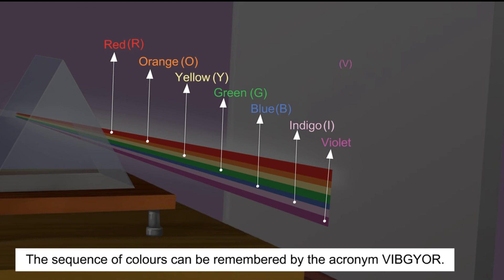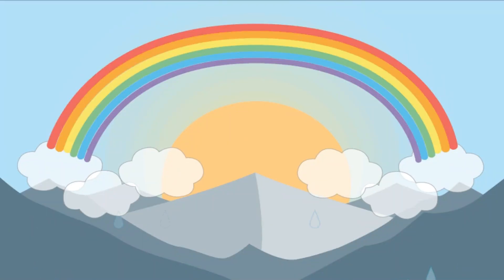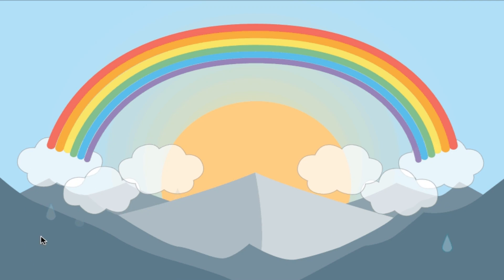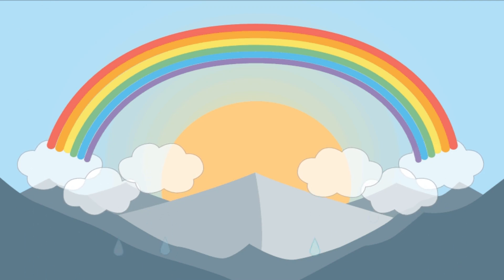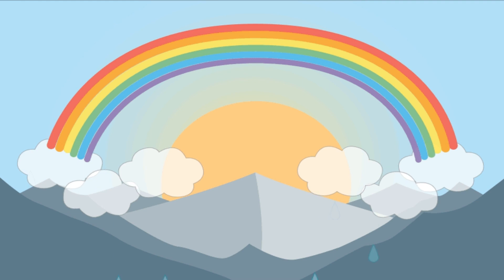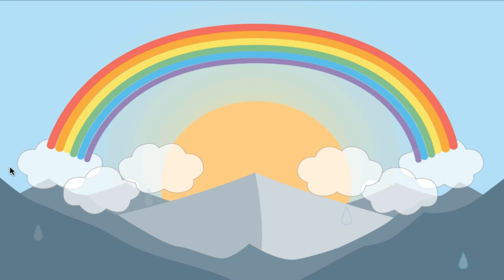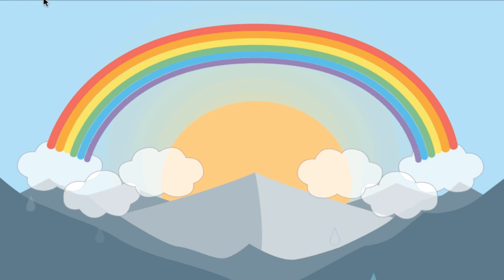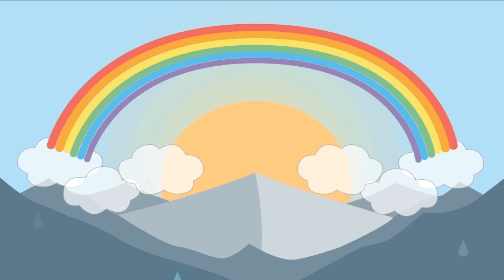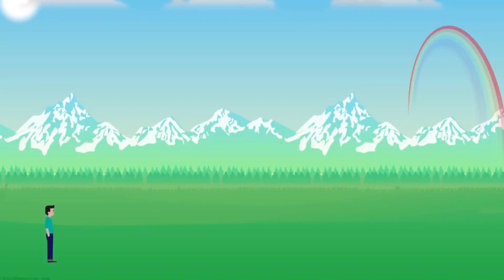But students, where can we look for a rainbow? You need to remember three things. First, it must be raining. Second, the sun must be shining. Third, you must be between the sun and the rain.